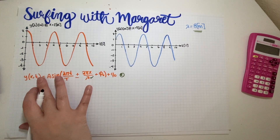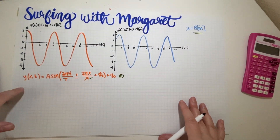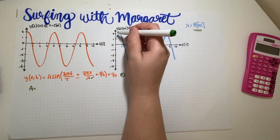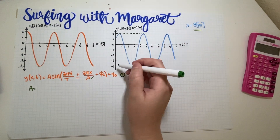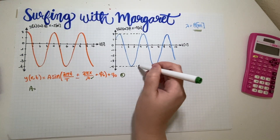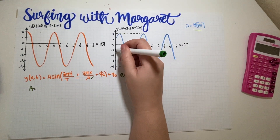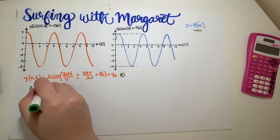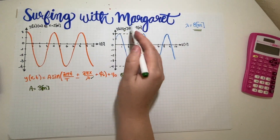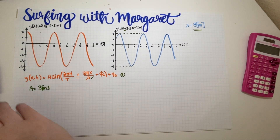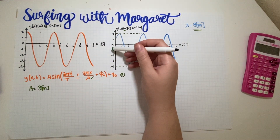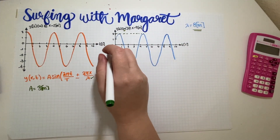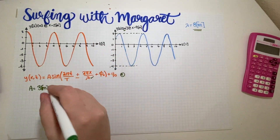Let's see what else we can figure out. We can very easily find the amplitude. The maximum is at 2 and the minimum is at negative 4, so the total range is 6. We divide by two: amplitude equals 3 meters. That's basically how you do it — count the full range and divide by two.